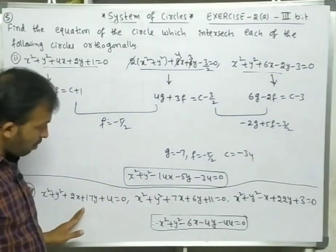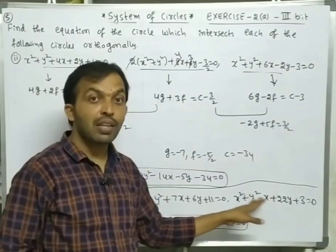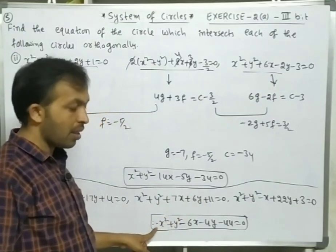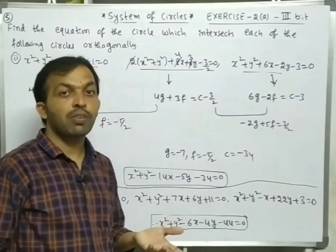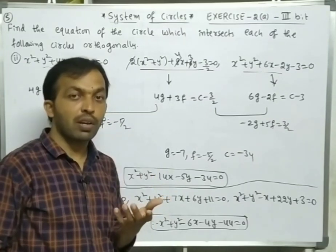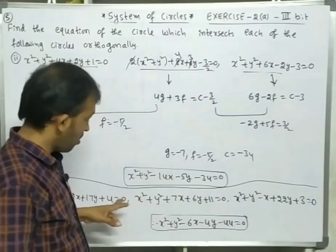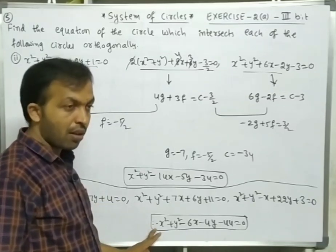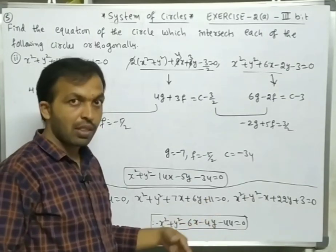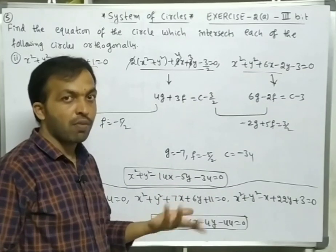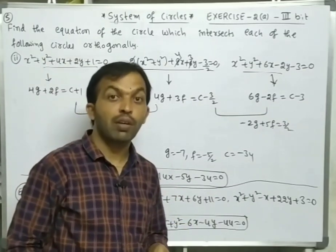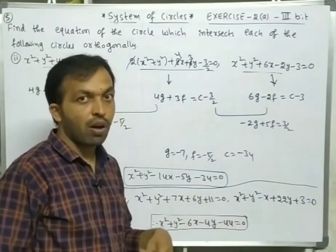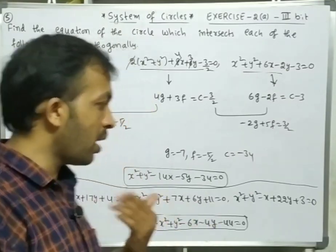Next, one more example problem: here we have 3 circles. These 3 circles are orthogonal to 1 circle; we should find the equation of that circle. For a multiple-choice problem, check the orthogonal condition 2gg' + 2ff' = c + c' by substituting each option. The option that satisfies all three orthogonal conditions is the right answer.